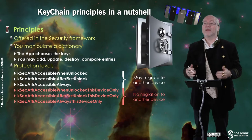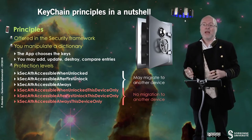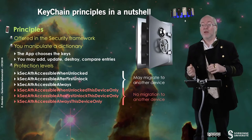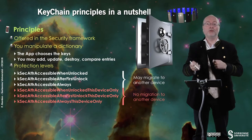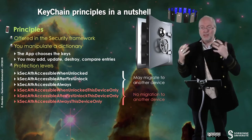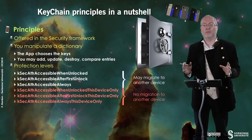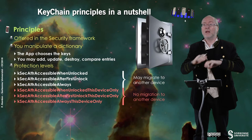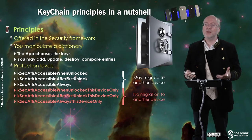You have several protection levels. You can have information accessible when the device is unlocked, information accessible only after the first unlock, or information you can always access. These three types are duplicated because you can have information that migrates from one device to another — for example, when you change your device and restore from a backup. But you also have information that never migrates, meaning it's not backed up and is really stored on the device only, so if you upgrade your device you will have to re-enter it.